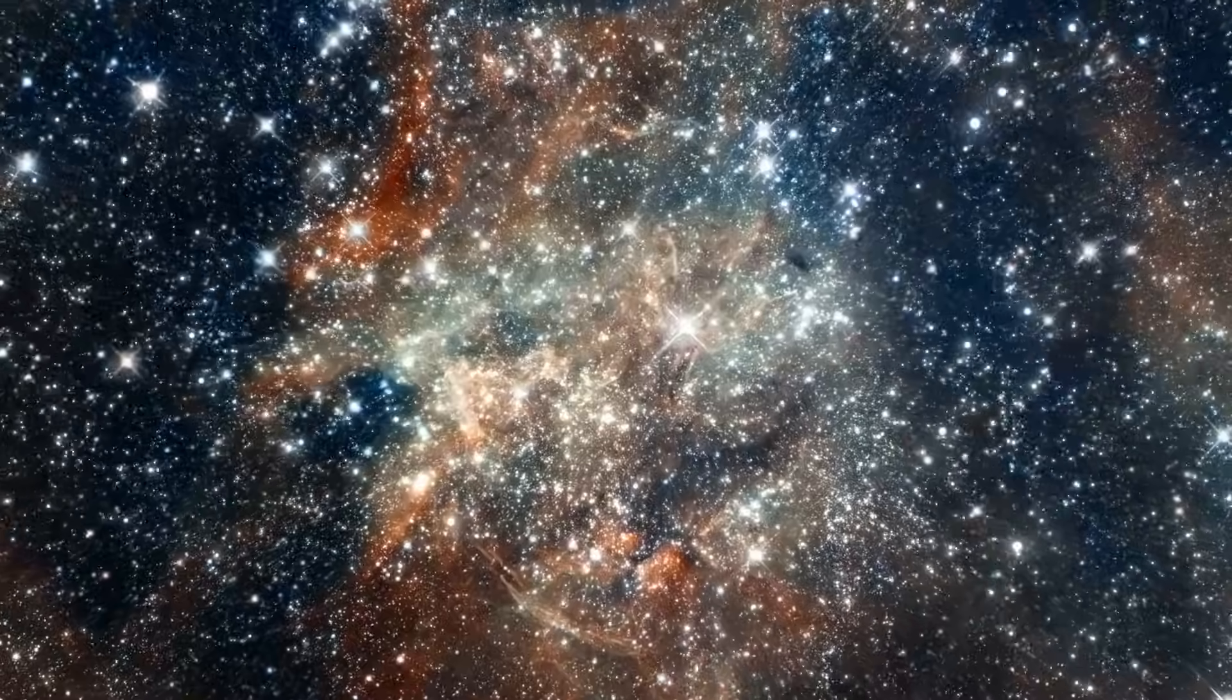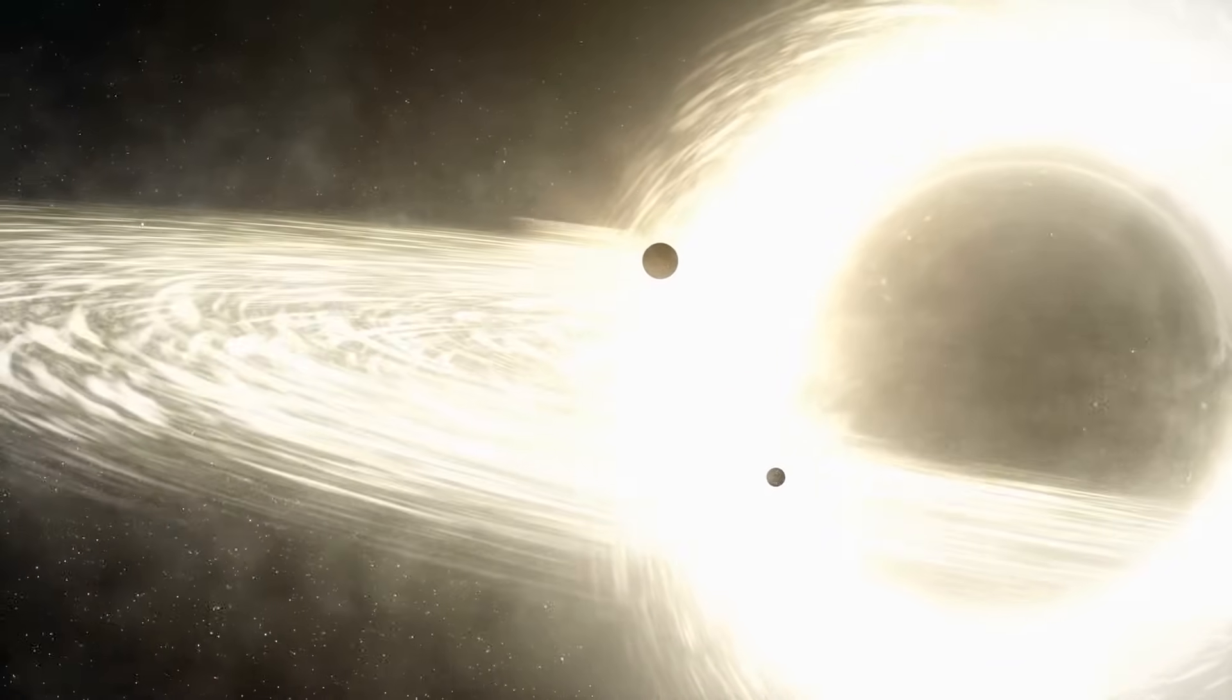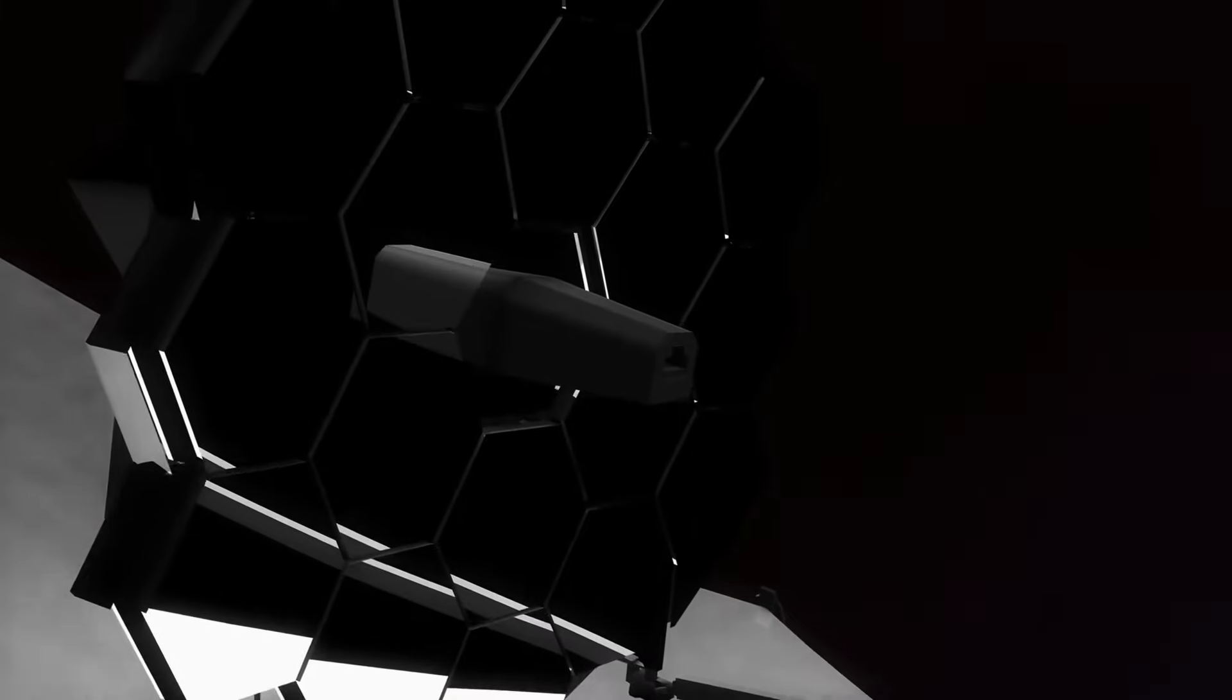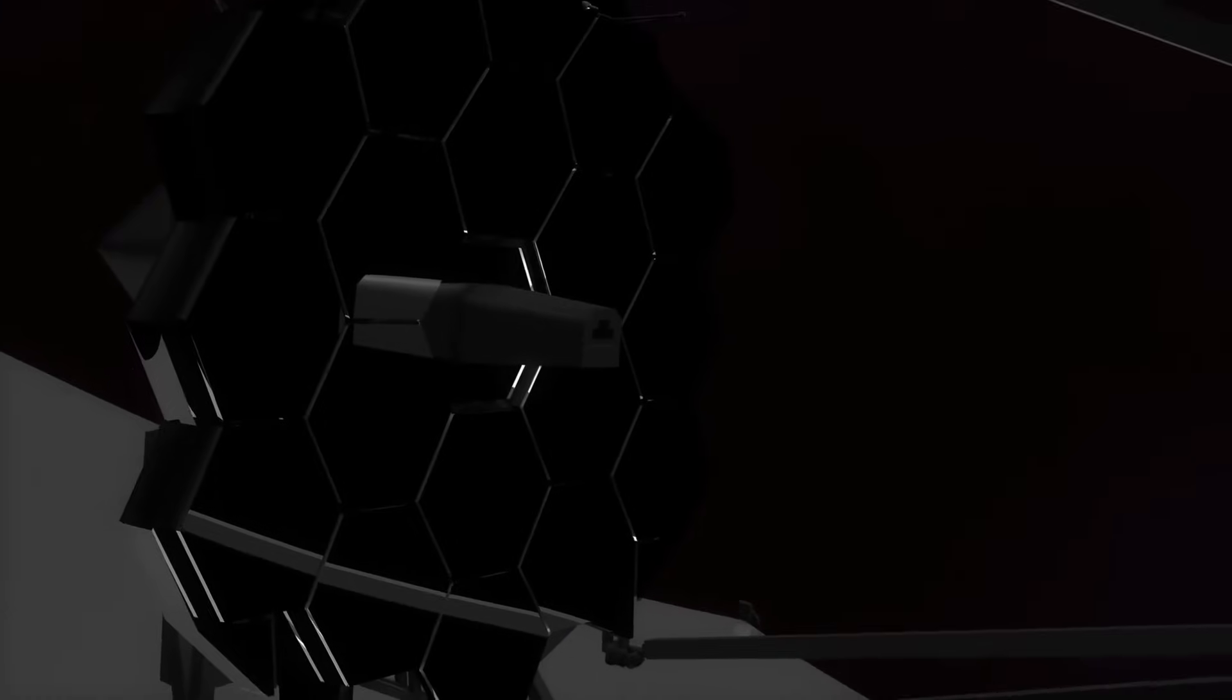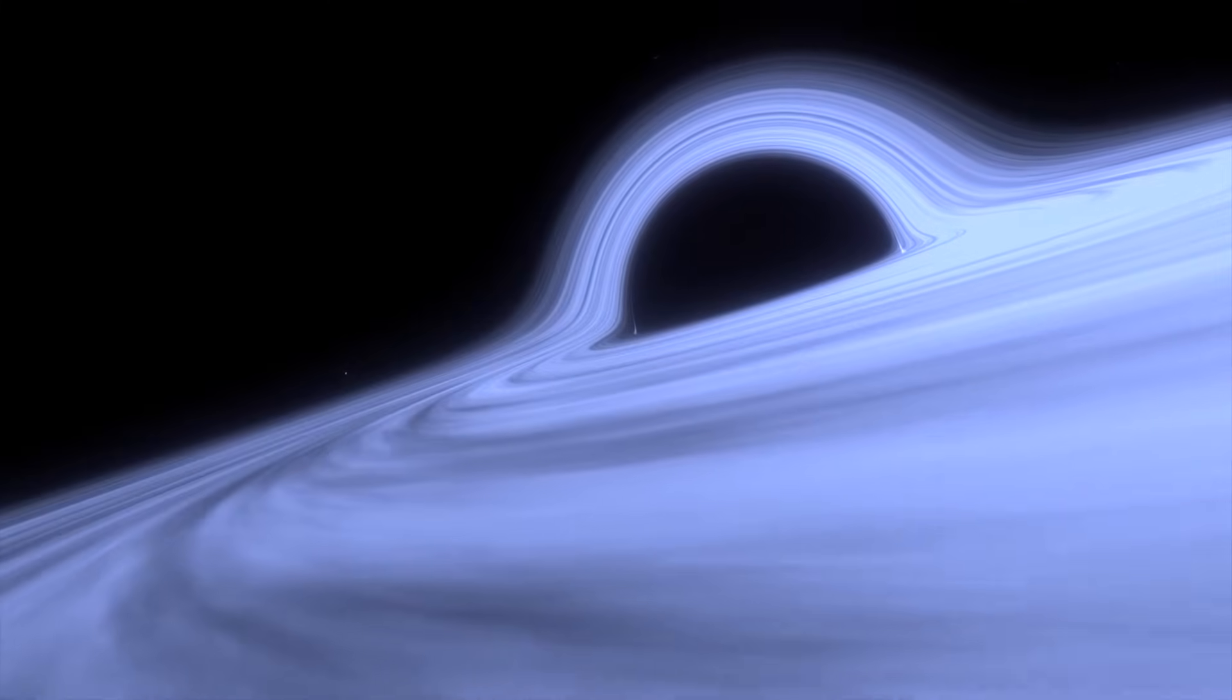In addition to finding these early galaxies, Webb has just identified a black hole that is nearly as old as the universe itself. The ultra-powerful sensors on the telescope have allowed scientists to detect what they believe to be the oldest known black hole in the cosmos.